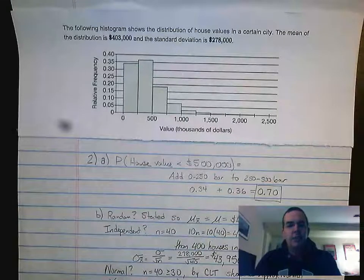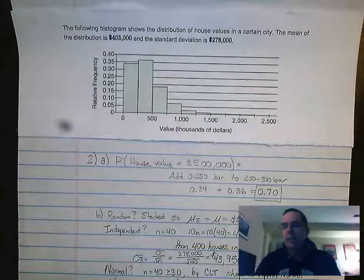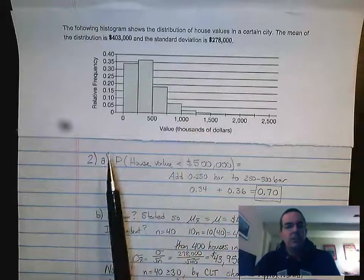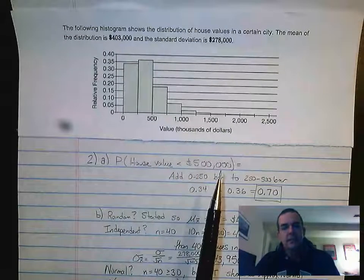So the question asked, what is the probability of having a house value less than $500,000? This is actually asking you, can you read a histogram? What you need to do is communicate statistically. So this probability house value less than $500,000.